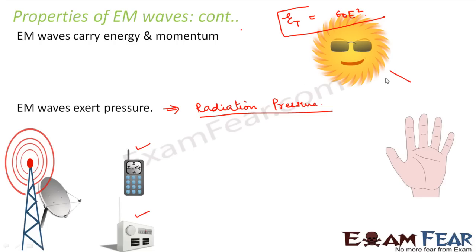For example, sunlight is nothing but an electromagnetic wave. If you stand under the sun and keep your palm open, after some time your palm becomes warm and you start sweating. How is heat transferred to the hand? When the sun shines, energy is radiated to the surface of the earth in the form of electromagnetic waves, these waves carry energy, and this energy is transferred to the hand. As a result the temperature of the hand increases and it becomes warm.